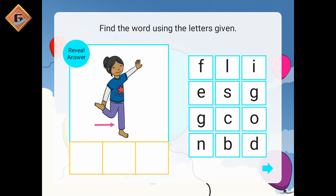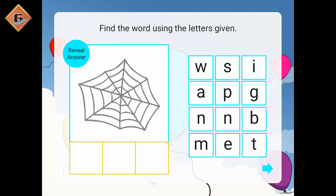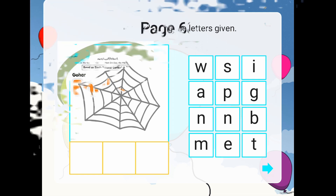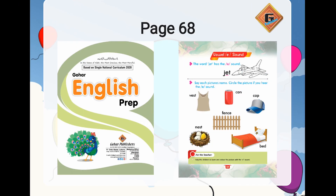Yeh leg hai, toh l-eh-g, leg. Yeh web hai, v-eh-b, web. Ab chalte hain book ke page number 68 pe. Page number 68 pe hai: 'The vowel eh sound. The word jet has the eh sound.' Jaise ki yahan pe underline hai, ab aap deikh sakte hain ki yeh jet ki 'eh' sound humare paas aati hai.